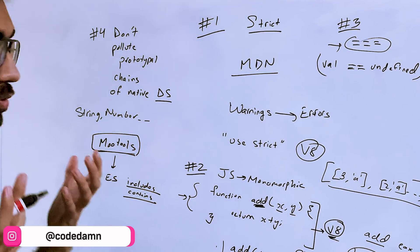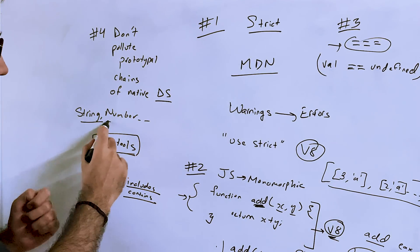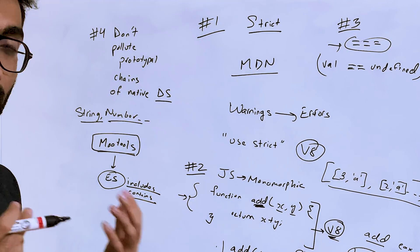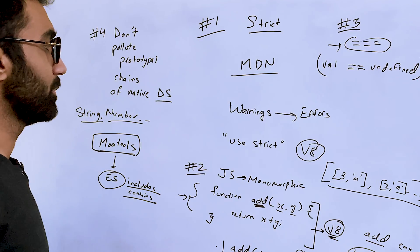Because MooTools was a very widespread library and it patched a lot of functions in the prototypal chain itself, which led to the fact that the community decided that if we ship this as a new feature in the language itself, it will break a lot of existing web.